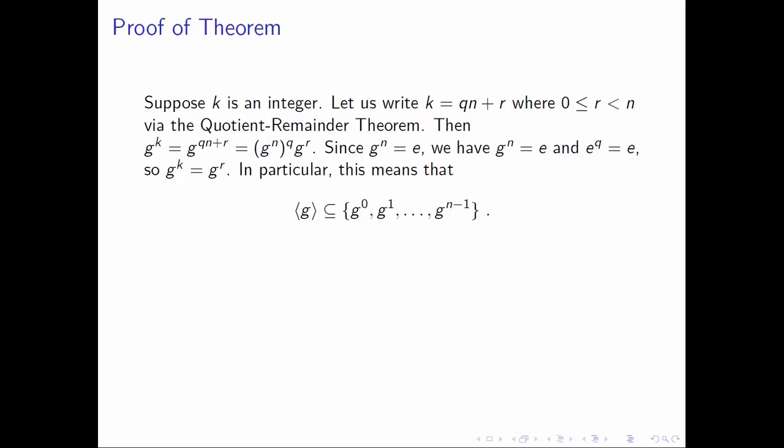If k is any integer and we look at g^k, we can rewrite k as qn + r and use rules of exponents to break this up as (gⁿ)^q multiplied by g^r. The benefit of doing this is that because n is the order of g, we know that g raised to the nth power gives the identity of our group. Taking the identity to any power q still yields the identity. So we conclude that g raised to this arbitrary integer power k equals g^r, where r is in the set {0, 1, ..., n−1}.